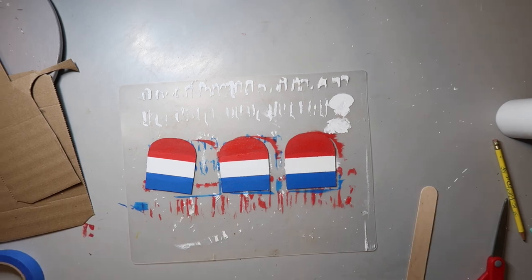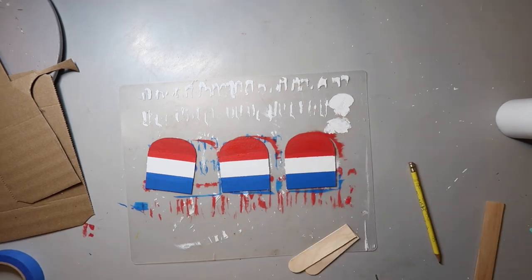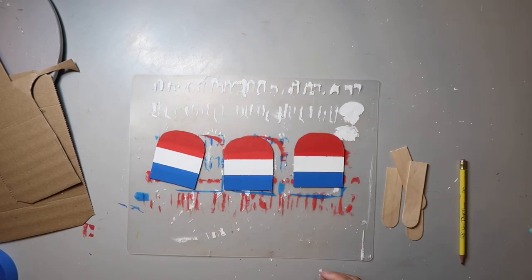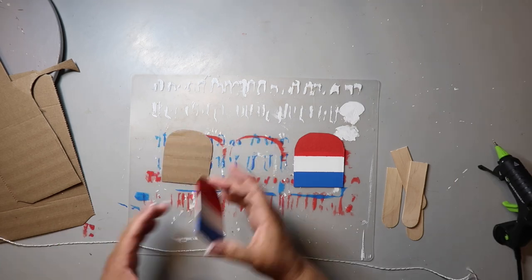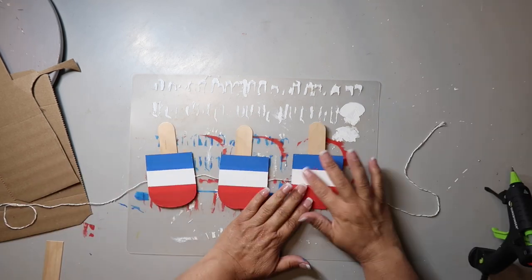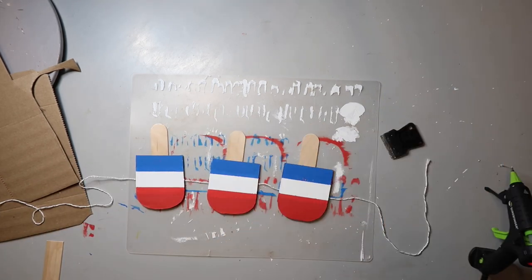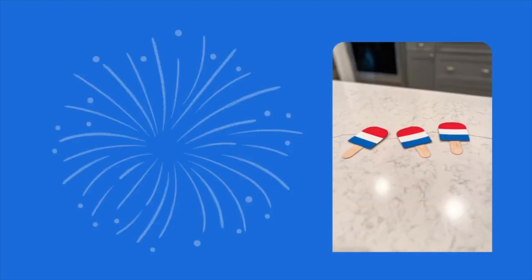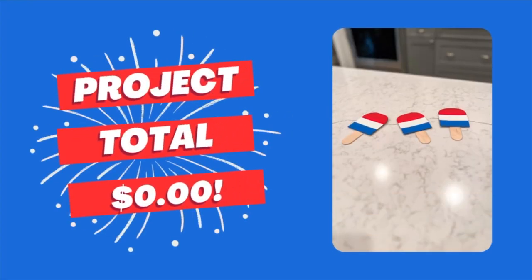Then I use jumbo craft sticks as the handles. I'm going to flip these over and use baker's twine as what's holding the garland together. Put a glob of glue down on top of that and the jumbo craft sticks. Do some touchups and that's it. This project actually cost me $0 because all of this came from my stash - the cardboard would have gone to the recycle bin or trash.